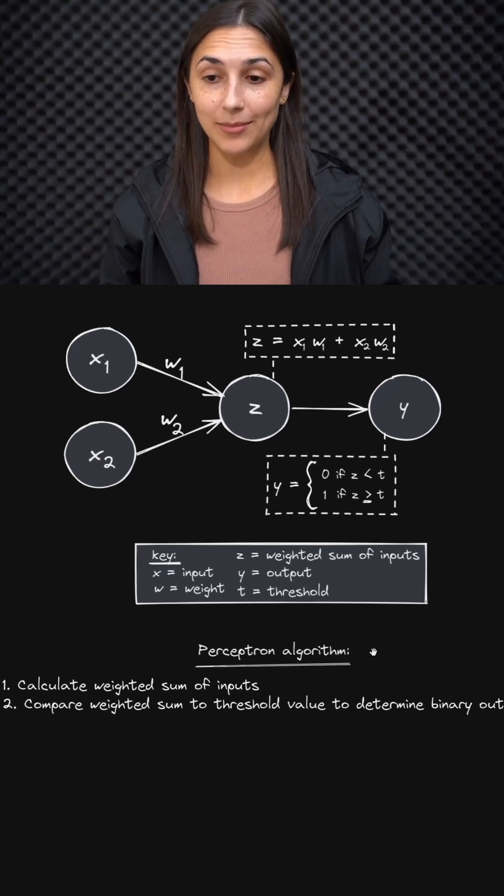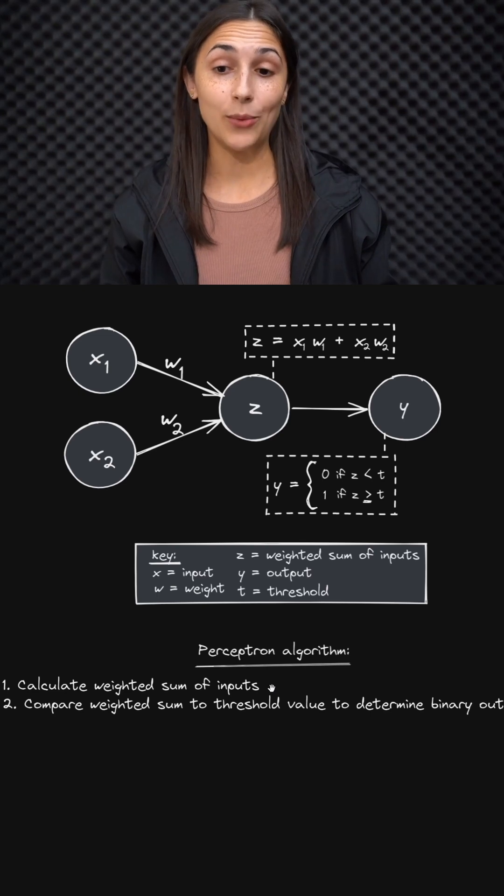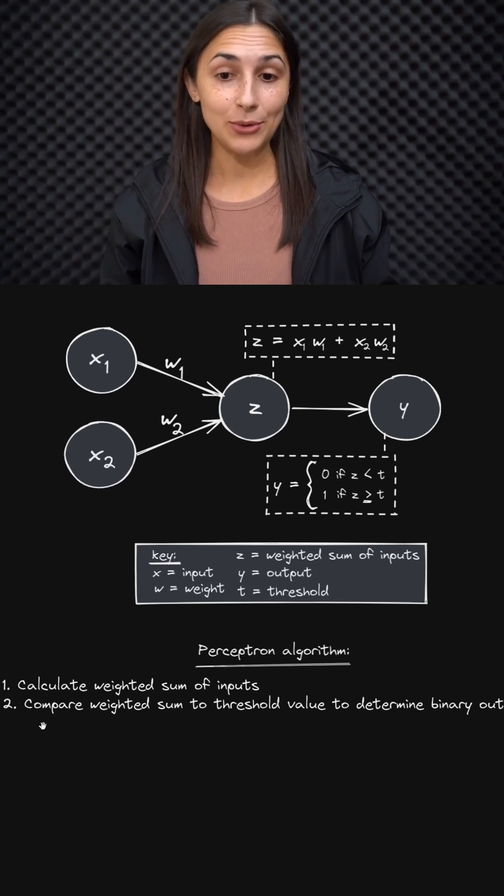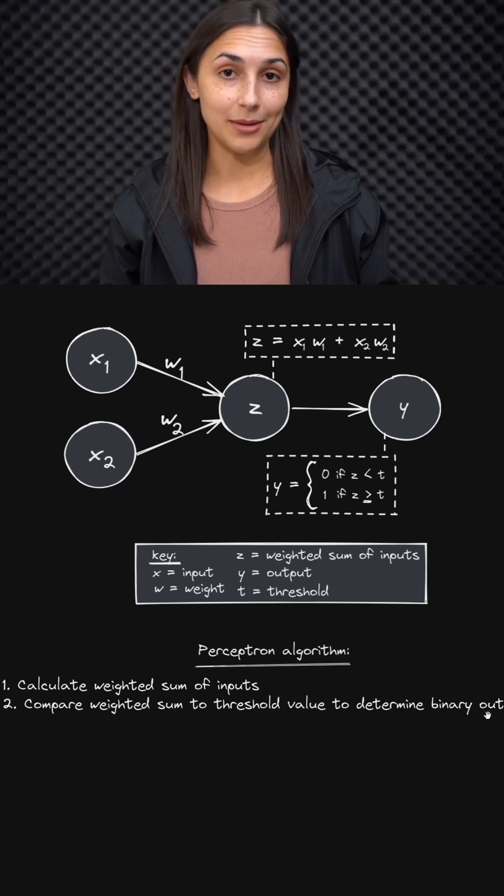We have the perceptron algorithm outlined here. It's simply step one, calculate the weighted sum of inputs. And step two, compare the weighted sum to a threshold value to determine the binary output.